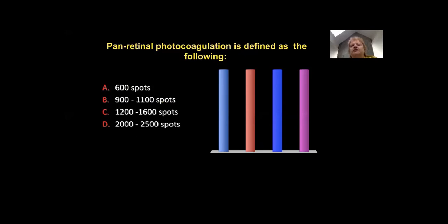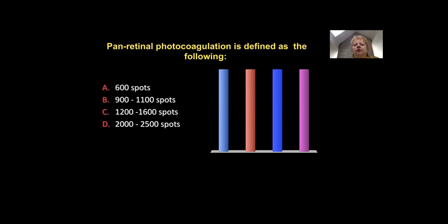Panretinal photocoagulation — this is laser treatment — is defined as follows, as defined in the Early Treatment Diabetic Retinopathy Study and the Diabetic Retinopathy Study — the classical definition using a standard argon laser. The choices are 600 spots, 900 to 1100 laser spots, 1200 to 1600 spots, and 2000 to 2500 spots. 60% of you said 1200 to 1600 spots, with a couple of other votes lower and higher. We'll emphasize this during the presentation.